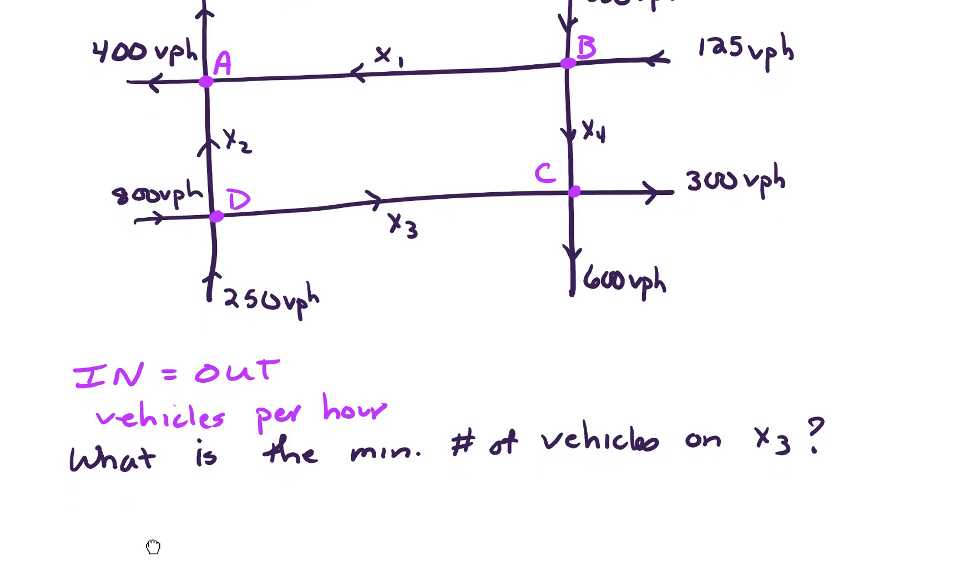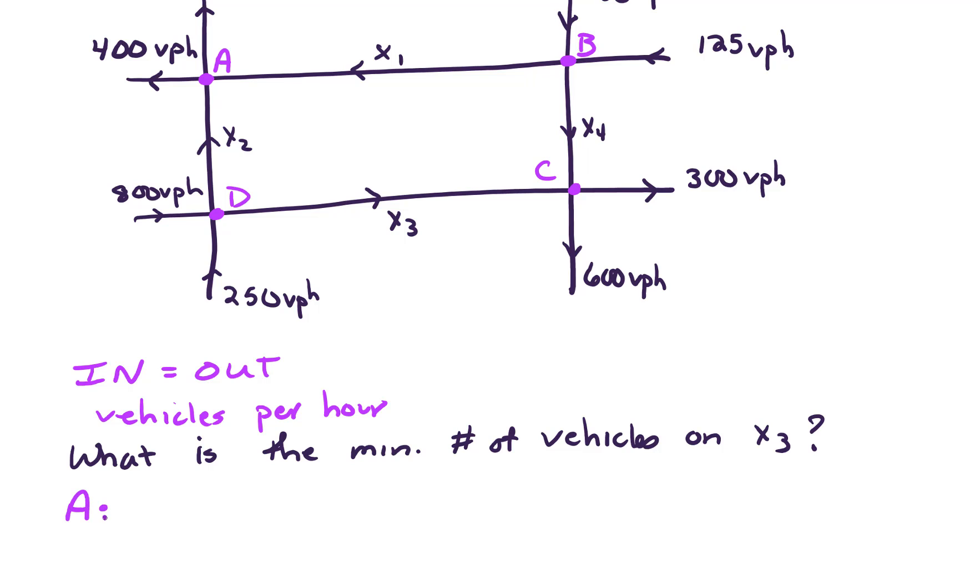So for intersection A, traffic in has to equal traffic out. Coming into this intersection, we have X1 plus X2. And what goes out, we've got 400 vehicles per hour and another 225 vehicles per hour going north. That's a total of 625 vehicles per hour. For intersection B, in equals out. What's coming in here is we have 350 and 125, so that gives us 475 coming in. And what's going out is X1 plus X4.